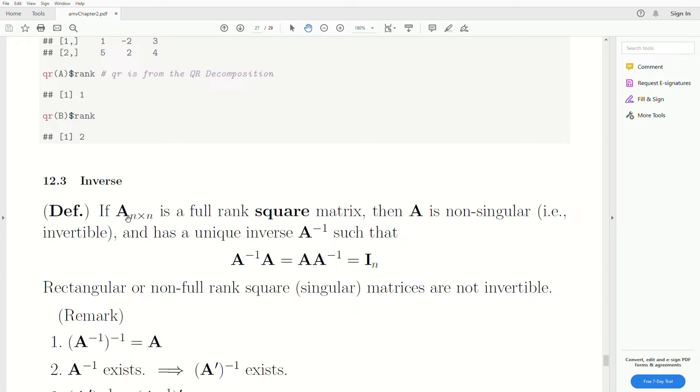Now the inverse of a matrix. So first of all, the matrix has to be square, N by N, and it's full rank. And since it's N by N, it's full column rank and full row rank. That's what I call a full rank matrix. Then A is what's called non-singular, which means it's invertible and has a unique inverse, which we'll call A raised to the minus one. It's just called A inverse is how we'll say that.